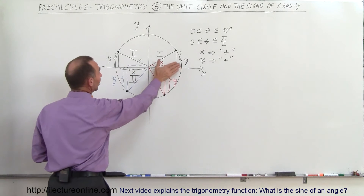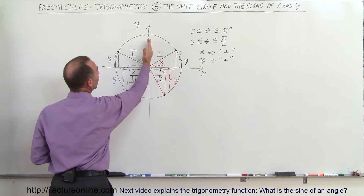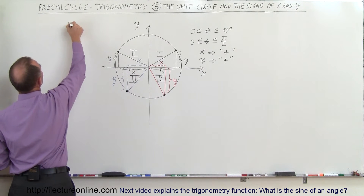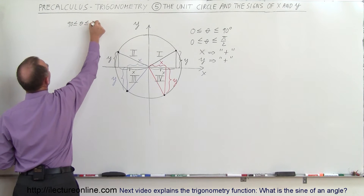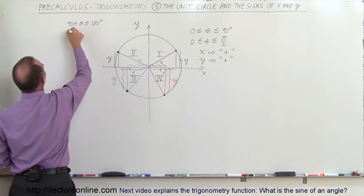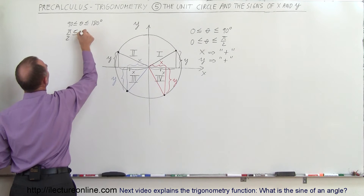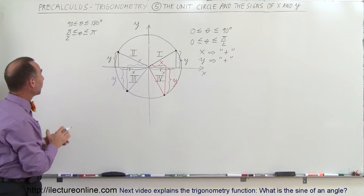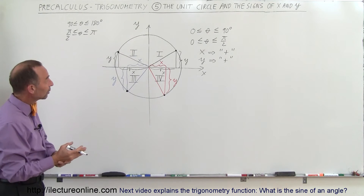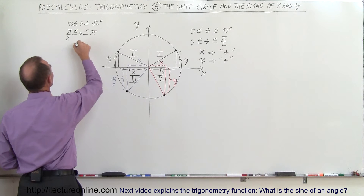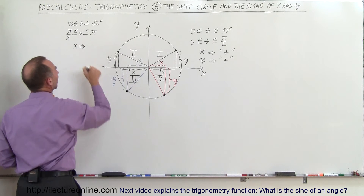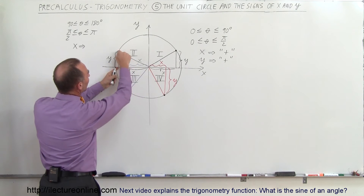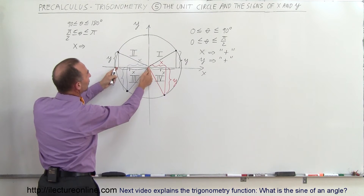When we move over to the second quadrant, the angle is between 90 and 180 degrees. In quadrant 2, 90 is less than or equal to theta, less than or equal to 180 degrees, or pi over 2 is less than or equal to theta, less than or equal to pi. Notice we're now on the left side of the y-axis, so the x-value for a point there will be a negative value.